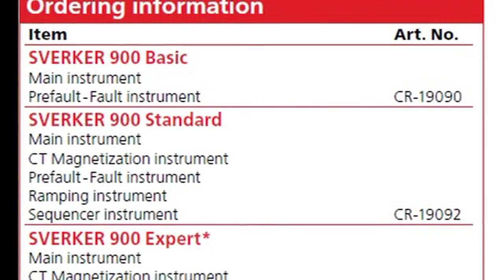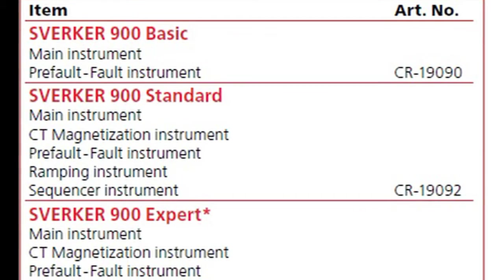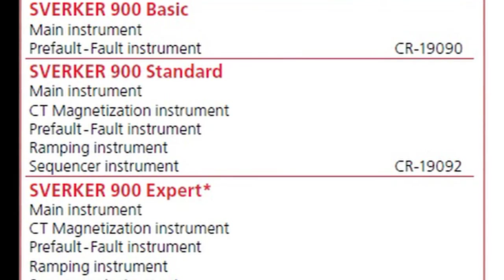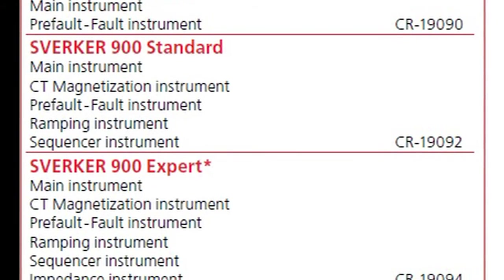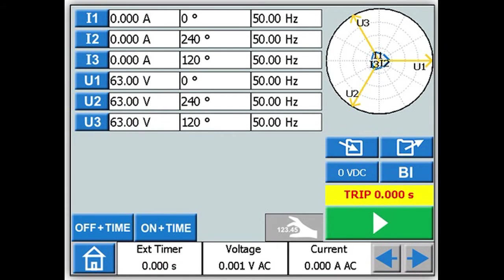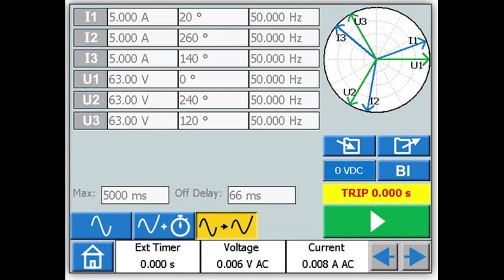The Sverker 900 series will be available in three levels of test functionality: basic, standard, and expert. The basic unit will include timing tests, manually determine pickup, dropout of voltage relay contact, general set, and inject and measure. It will also have pre-fault timing tests to be used mainly to test relay which require a simulation of a pre-fault state before the fault simulation.